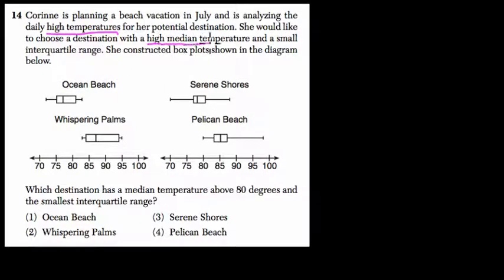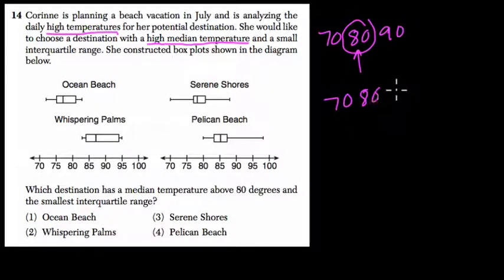So median is the halfway point of your data. If you sort them in order, it's the middle data point. If there's no data point exactly in the middle, it's the average of the two data points closest to the middle. So if we had temperatures of 70, 80, and 90 here, 80 is the median. But if we had 70, 80, 90, and 100, these two numbers are closest to the middle. So we average them, and the median would be 85. Basically 80 plus 90 divided by 2.